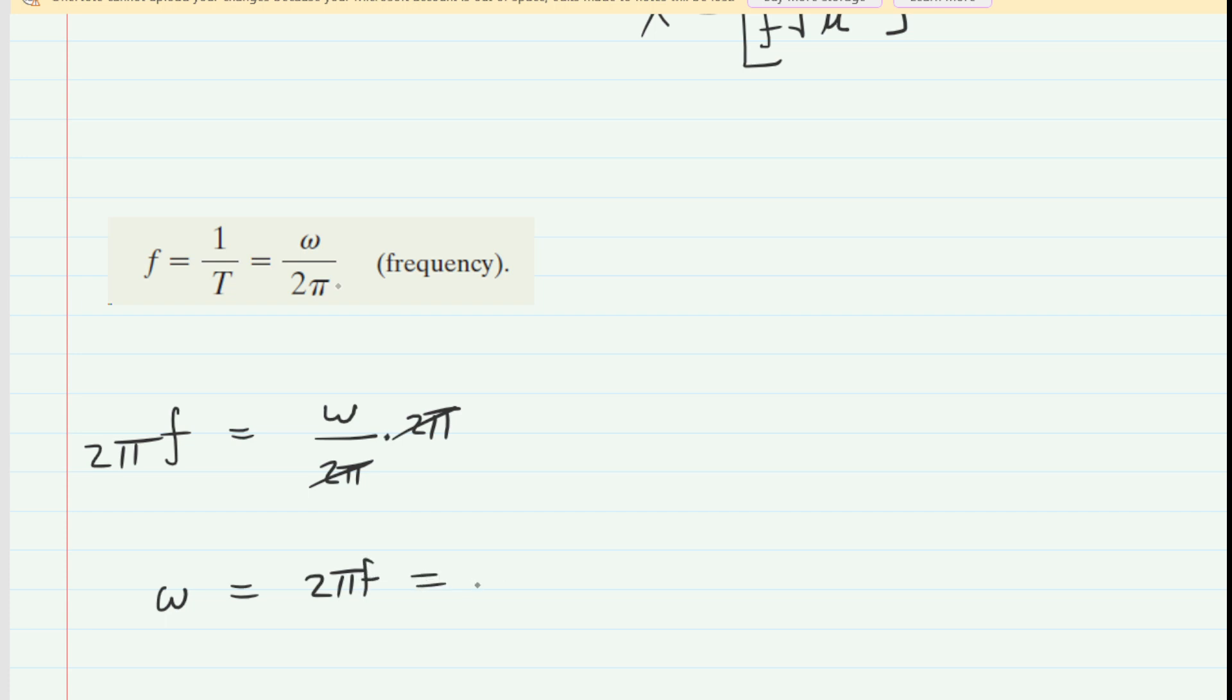We know the value of the frequency is 100 hertz. And when we punch that into our calculator, we end up with 628. And then we have a unit of radians, since 2π is in radians, and then per second, because hertz is equivalent to an inverse second.